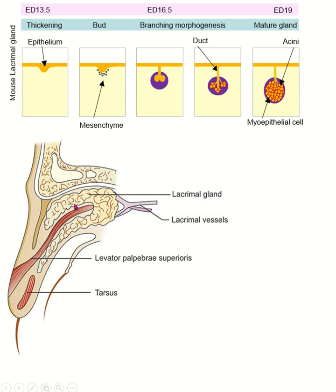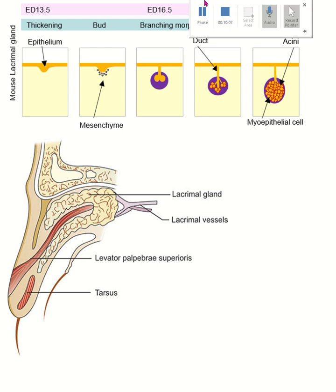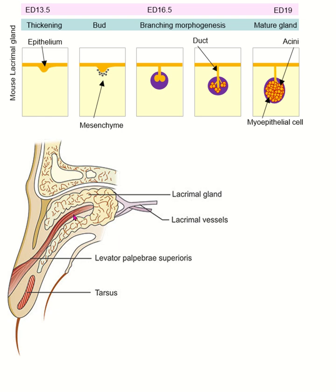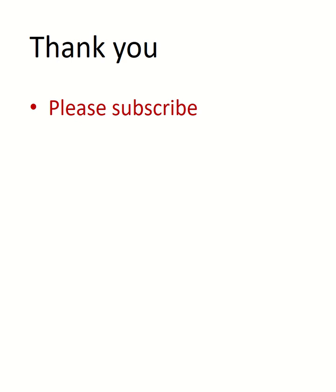The lacrimal gland is divided into two parts: the orbital part and the palpebral part. This division occurs between the 9th and 11th week of gestation. The lateral horn of the aponeurosis of the levator palpebrae superioris muscle plays a critical role in this division. The orbital and palpebral lobes are interconnected through a ductal system that facilitates tear production and drainage. So this is all about the development of the lacrimal gland.